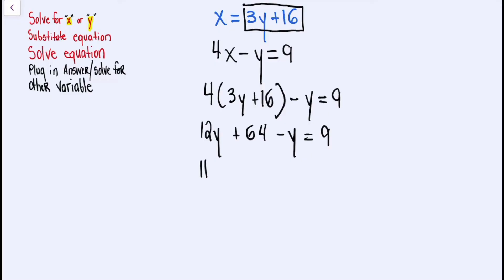Combine our like terms to get 11Y, that's 12Y minus Y. And we're going to write the rest of this equation. We still haven't solved for Y. Once we do get Y by itself, we should have 11Y is equal to negative 55. That's after we subtract 64 on both sides. Now we get our final answer and we've learned that Y is equal to negative 5.